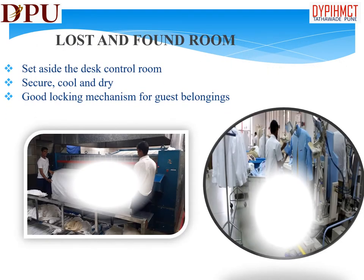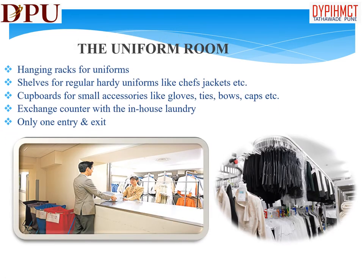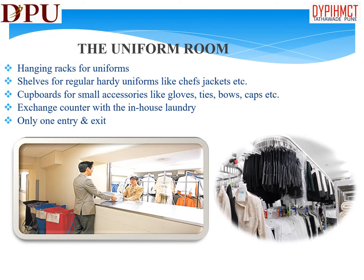Lost and found room: this is usually an area set aside in the desk control room, away from high traffic areas. A cupboard with a good locking mechanism should be provided here for storing the lost and found articles so that they may be claimed later. Uniform room: this is the room where all the uniforms are kept. Proper shelves are there for regular hardy uniforms like chef's jackets. An exchange counter is also there for exchanging uniforms.